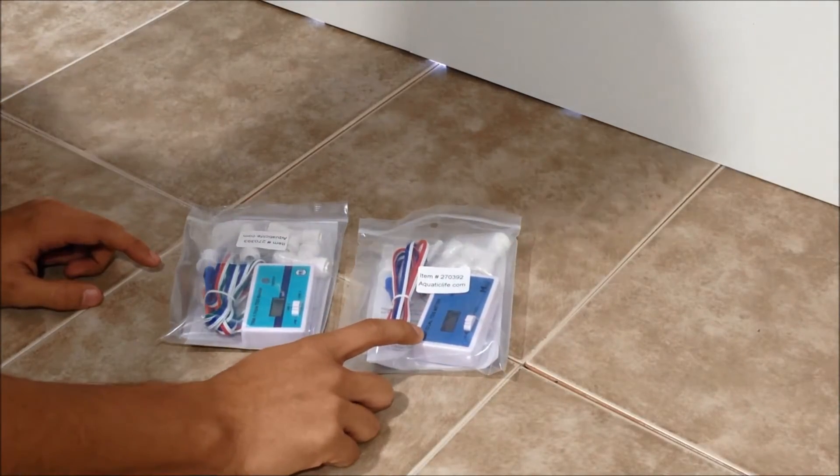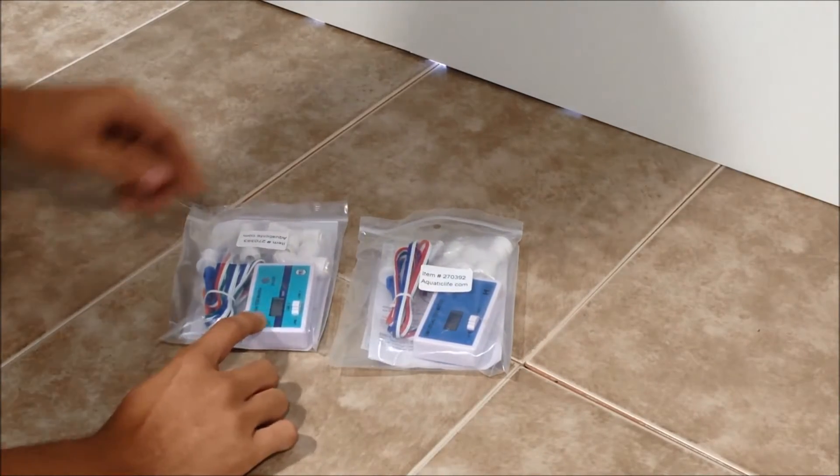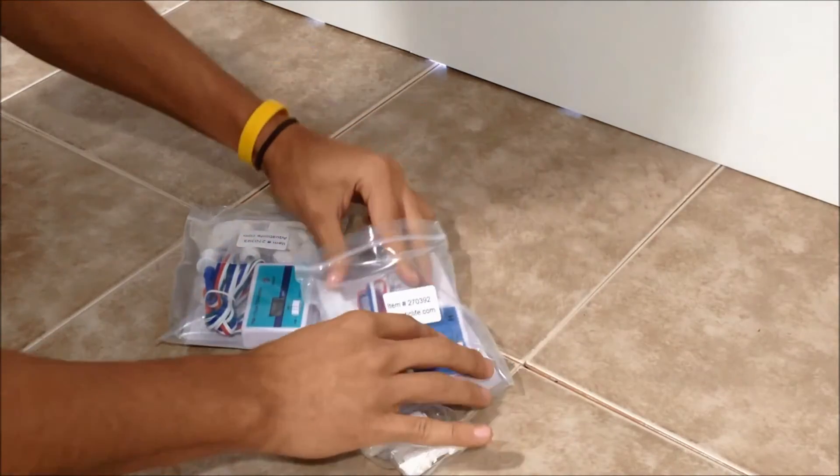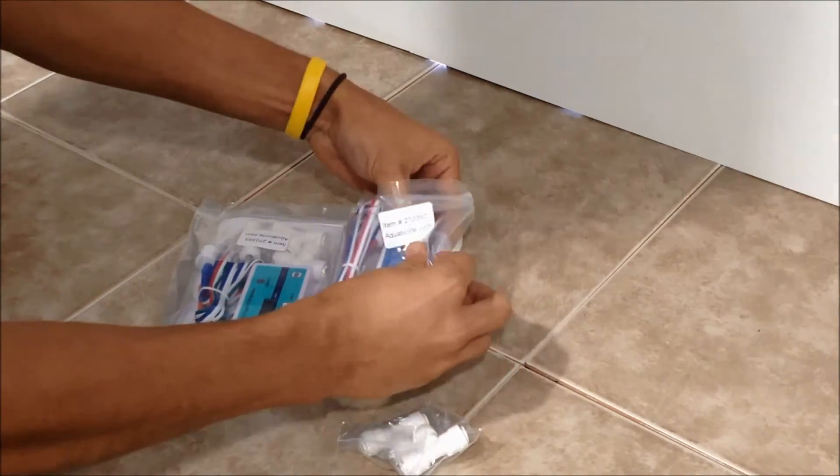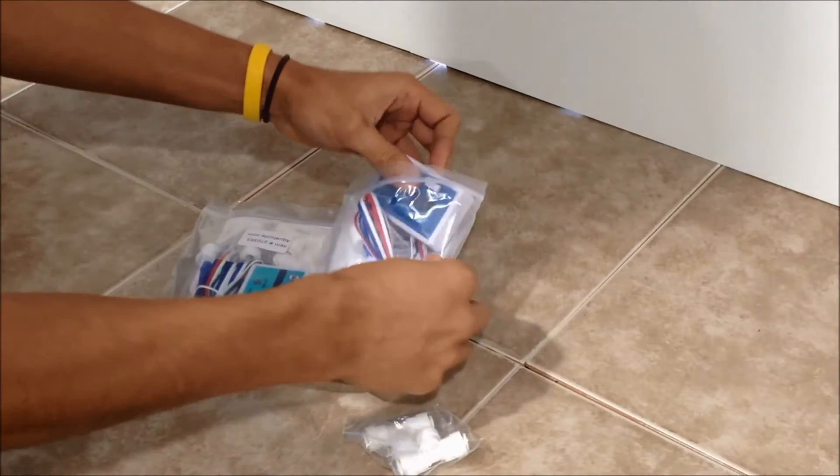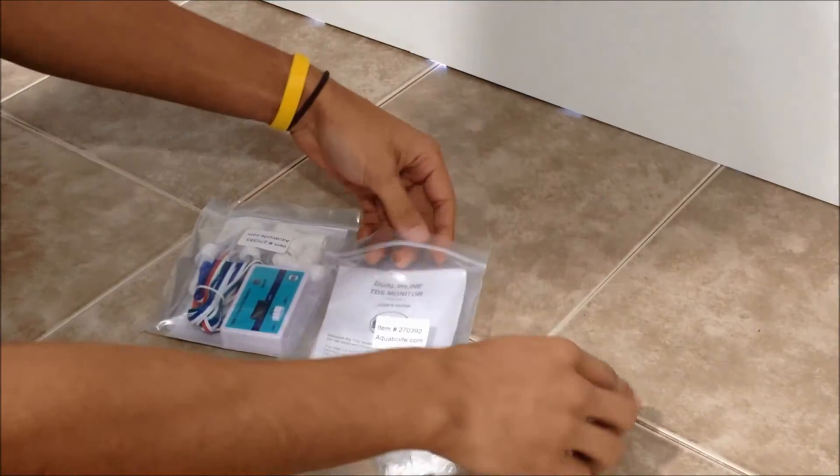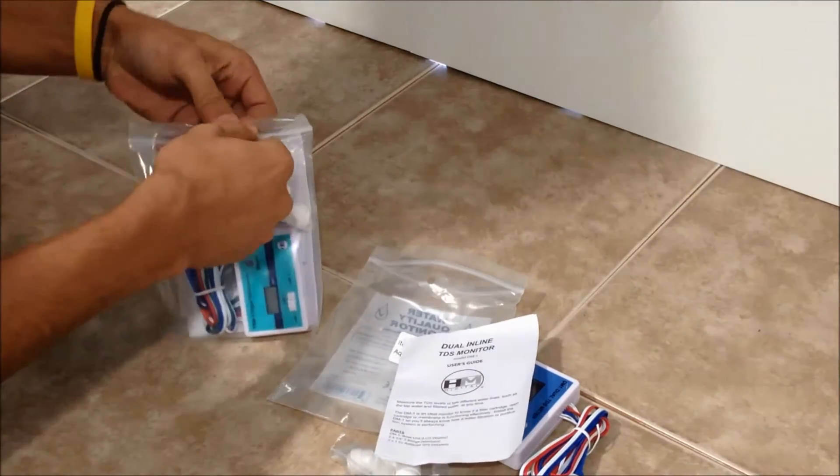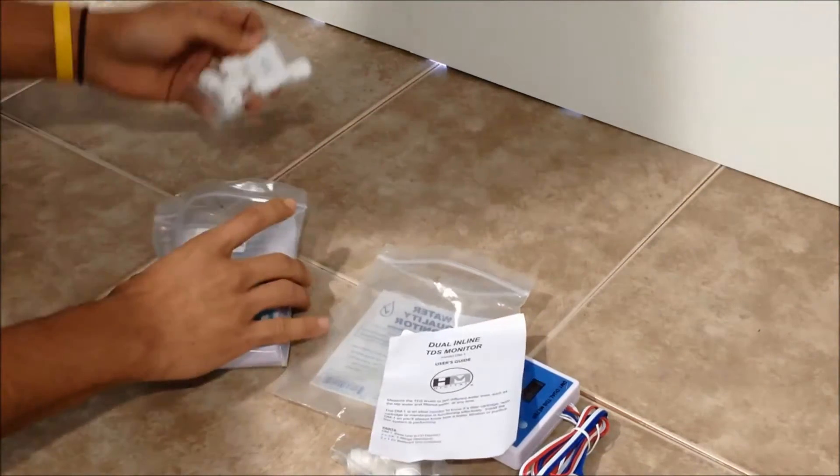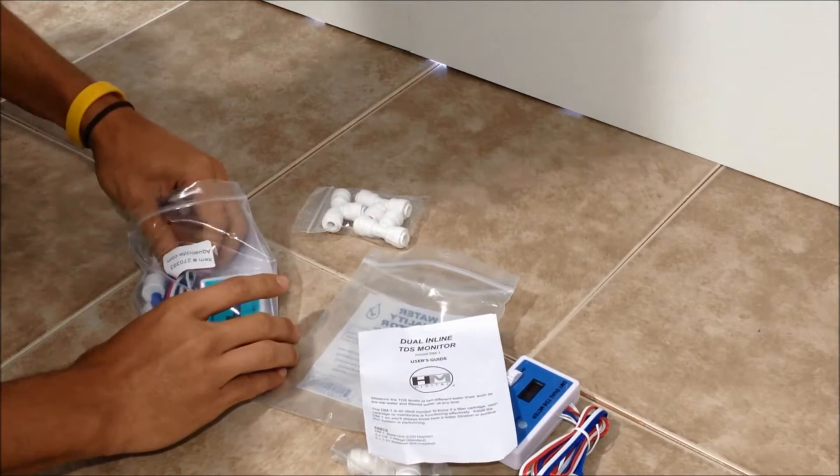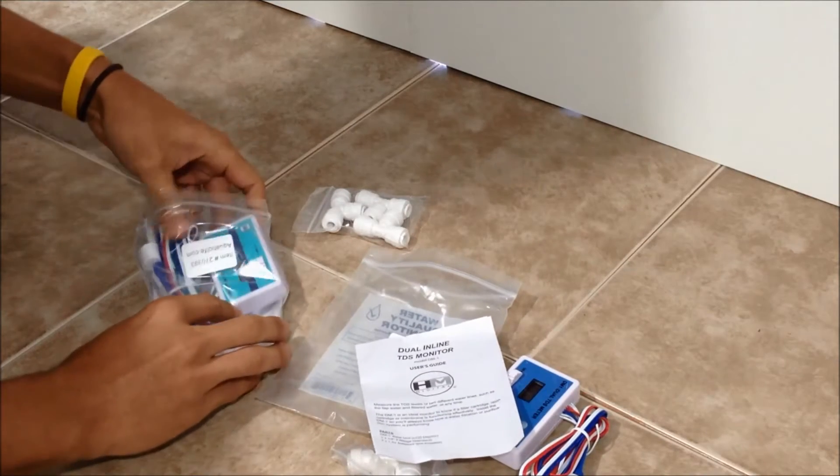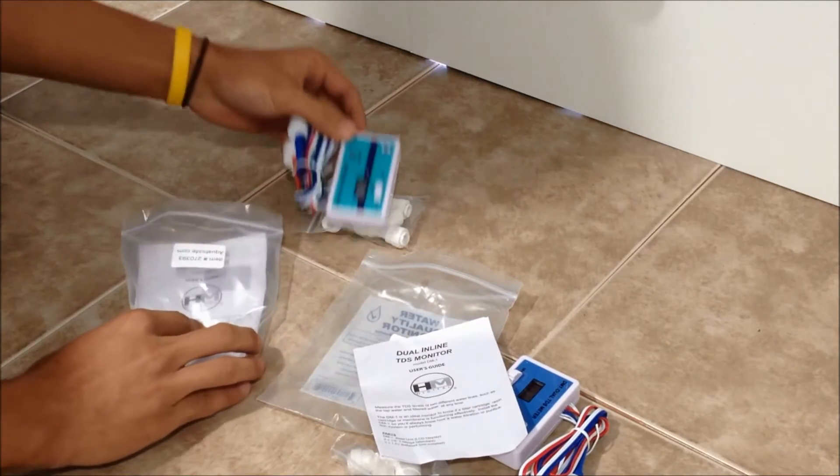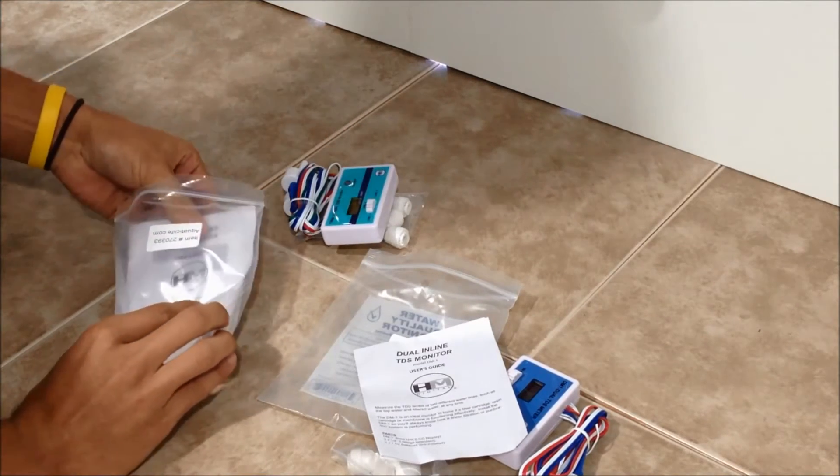I have an HM dual TDS meter here and the HM triple TDS meter here. The dual includes two Murloc fittings, your TDS meter, and some instructions. The triple is going to include three Murloc fittings, your TDS meter with the three probes, and instructions.